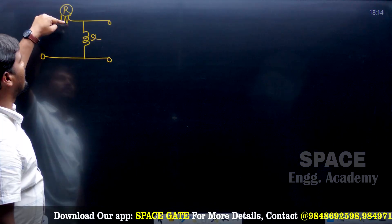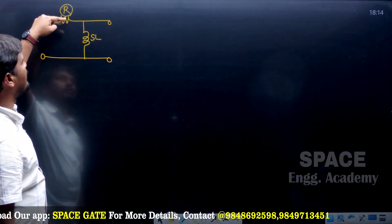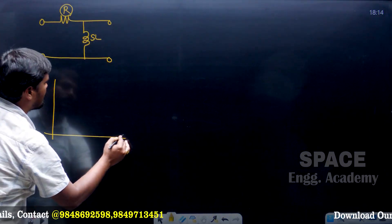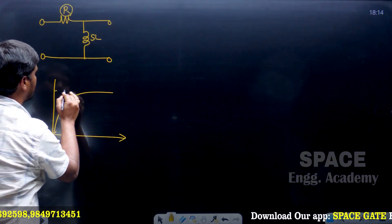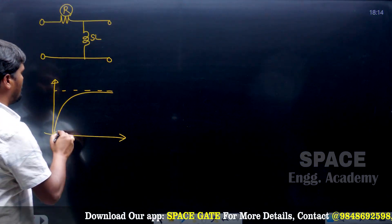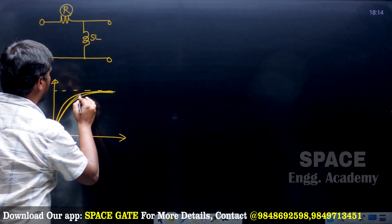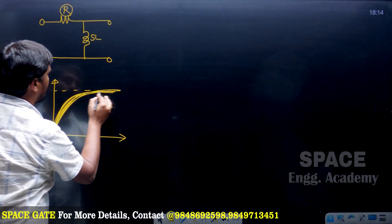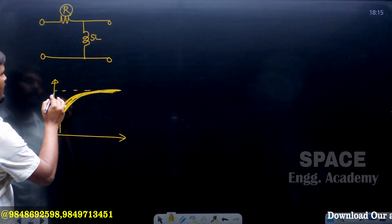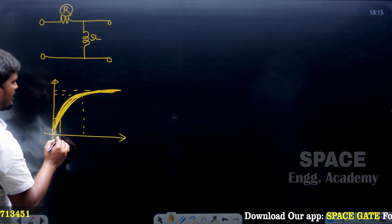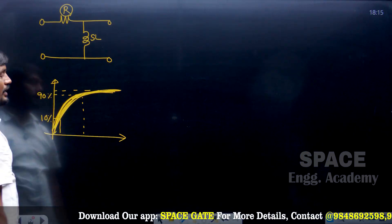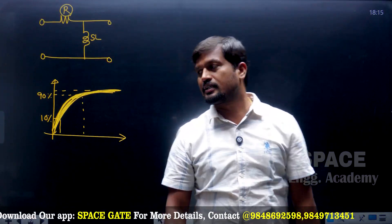When a resistor is connected to the circuit, it will dissipate the energy, and due to the resistance the circuit will come to steady state. Therefore the response of a first-order system is going to be like this — there is only one transient element, no more than one. The rise time for the first-order system is defined between 10% of the output to 90% of the output.